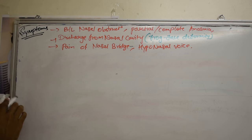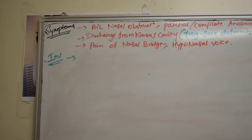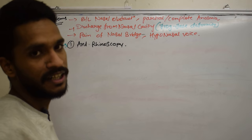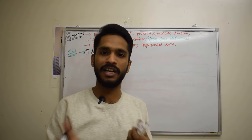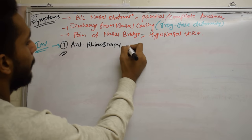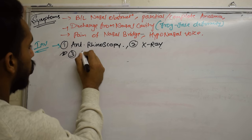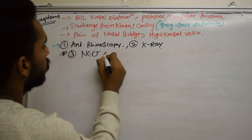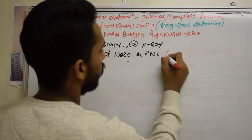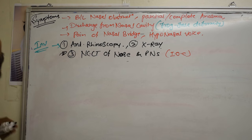Now let's talk about the investigations for ethmoidal polyps. First, we do anterior rhinoscopy, where we find multiple bilateral pearly white grape-like masses arising from the nasal or sinus mucosa. Then we do an X-ray to detect the extent of the disease. The investigation of choice is non-contrast CT of the nose and paranasal sinuses.